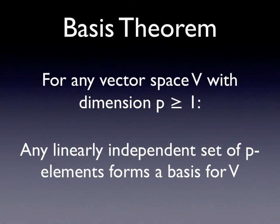An important theorem is called the basis theorem. This states that for any vector space V with dimension p greater than 1, any linearly independent set of p elements forms a basis for V. So if you have a p-dimensional vector space, then p linearly independent vectors in that space will always form a basis. For example, if you're in R2 and you have two linearly independent vectors that span R2, then those two vectors form a basis for R2.